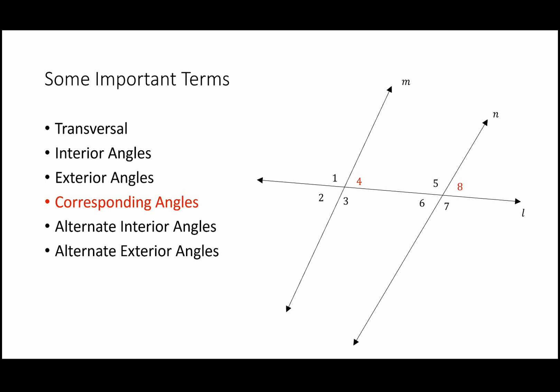Alternate interior angles are inside the sandwich — that's what interior means — and alternate indicates they're on opposite sides of the toothpick. Angles 4 and 6 meet that criteria, and angles 3 and 5 are another pair of alternate interior angles. Through context clues, you can determine alternate exterior angles: those are outside the sandwich but on opposite sides of the toothpick — angles 2 and 8, and angles 1 and 7.